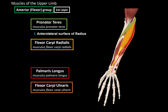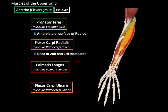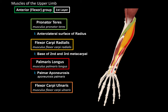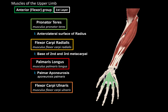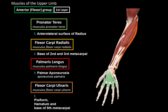The flexor carpi radialis inserts at the base of the second to third metacarpal bones — its function is to flex and adduct the hand. The palmaris longus inserts at the palmar aponeurosis, a fibrous triangle covering the palm to protect the neurovascular structures underneath it; its main function is to flex the hand. The flexor carpi ulnaris inserts at medial wrist structures like the pisiform and hamatum, as well as the base of the fifth metacarpal bone, and its function is to flex and adduct the hand.